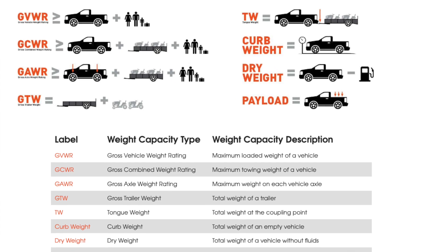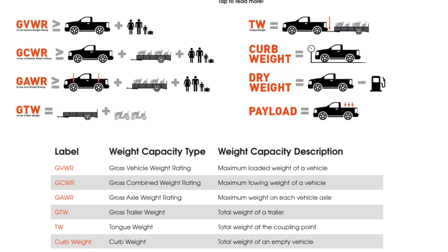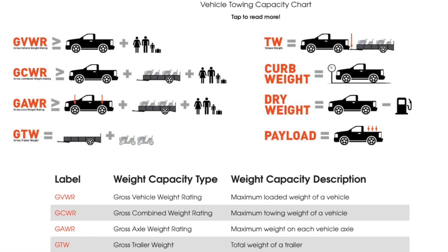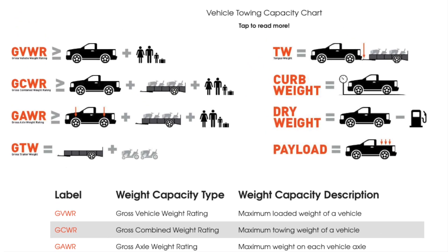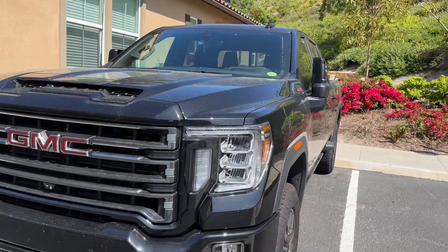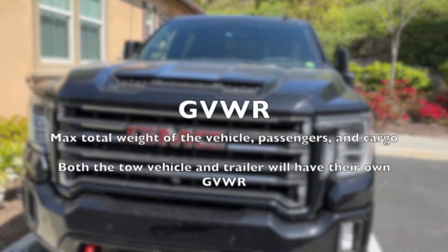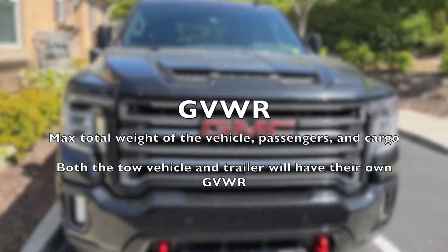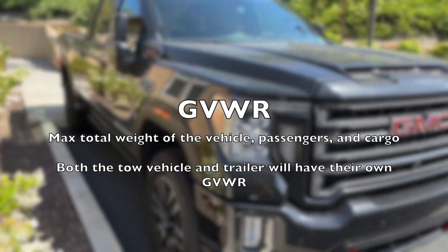Step 3: Know the terms and their meanings. There is a great website link below in the description that has an excellent visual for these terms as well. The first term is gross vehicle weight rating, which is GVWR, and this means the max total weight of the tow vehicle, passengers, and cargo.